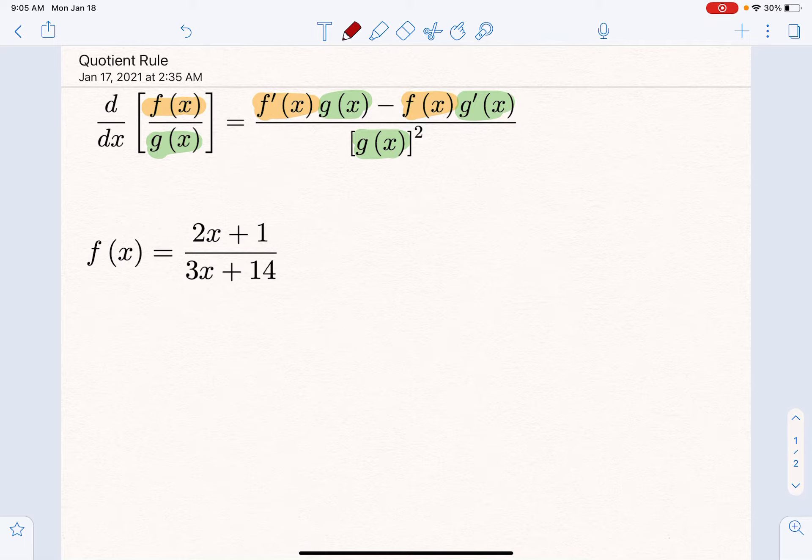Minus the first times the derivative of the second. So that's what's different—there's a minus, which means order matters when you take derivatives. We have to be very careful that we do the right ones first. And then we're dividing by the denominator squared.